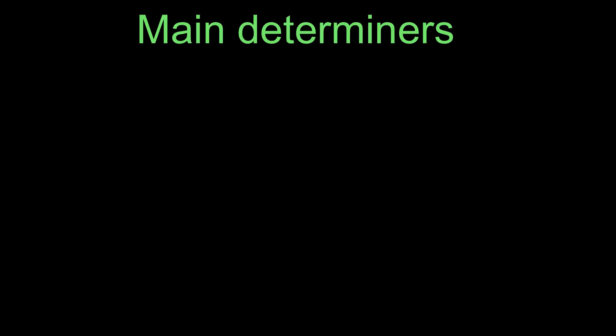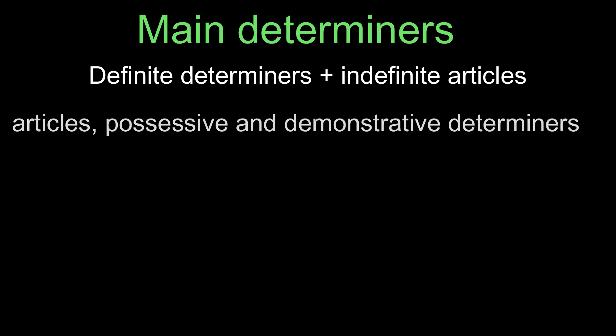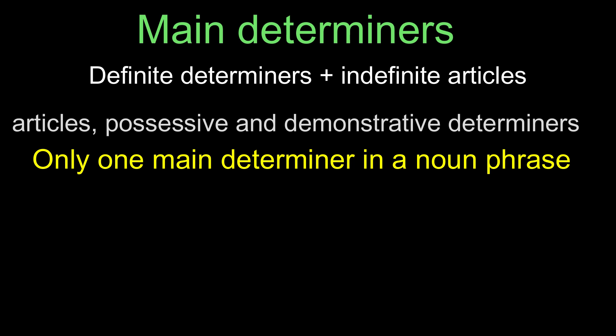Main Determiners: Definite determiners and indefinite articles are main determiners. So, main determiners are articles, possessive determiners, and demonstrative determiners. There can be only one main determiner in a noun phrase.